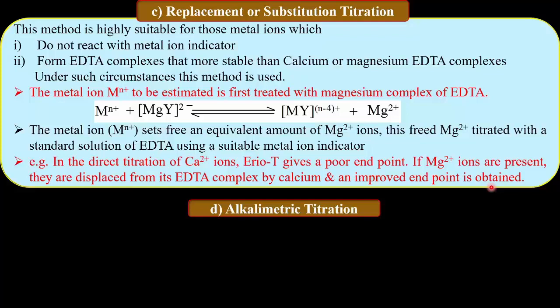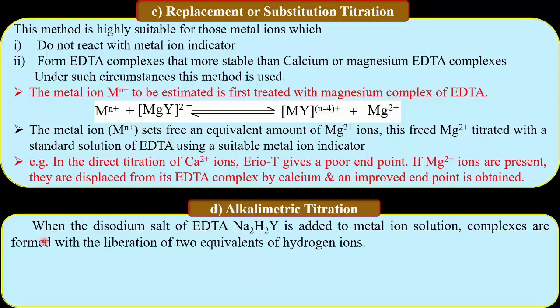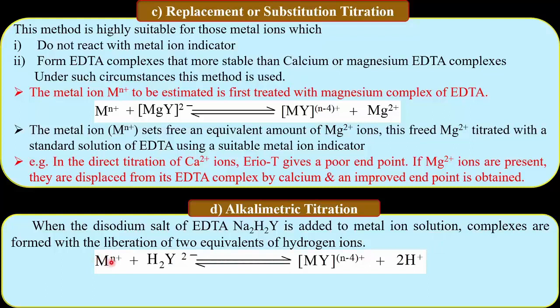The last type of titration is the alkalimetric titration. When the disodium salt of EDTA is added to the metal ion solution, complexes are formed with the liberation of two equivalents of hydrogen ions per metal ion — that is, one metal ion releases two H+ ions. These H+ ions are then titrated with a standard solution of NaOH using an acid-base indicator.